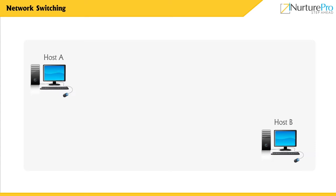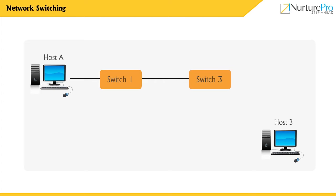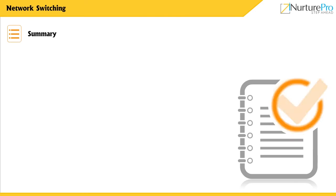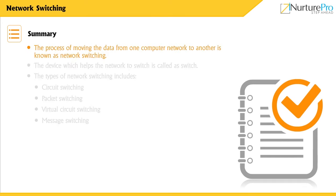In the figure of message switching, messages can take any path, such as from host A to switch 1, switch 1 to switch 3, switch 3 to switch 4, switch 4 to switch 2, and then up to the destination as host B.